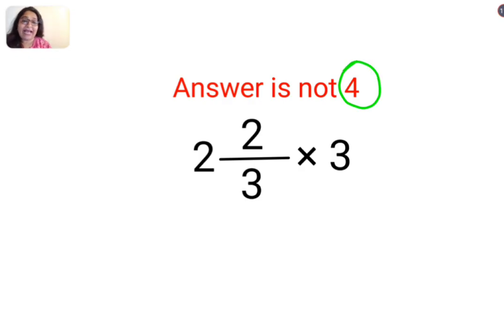See here we have 2 and 2 by 3 multiplied by 3. So what people think is this is canceling. So this is basically 2 multiplied by 2 or 2 plus 2. The answer for this one should be 4.